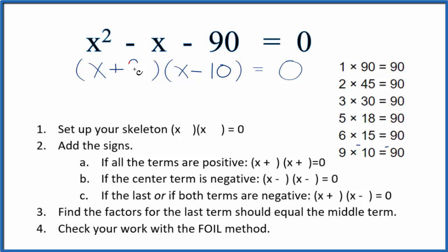Now we can check and see if we're correct using the FOIL method. First terms x squared, outside terms minus 10x, plus 9x for the inside term, and then 9 times minus 10 is minus 90. All that equals zero. And if we add these here, minus 10x plus 9x that's minus x, so x squared minus x minus 90.